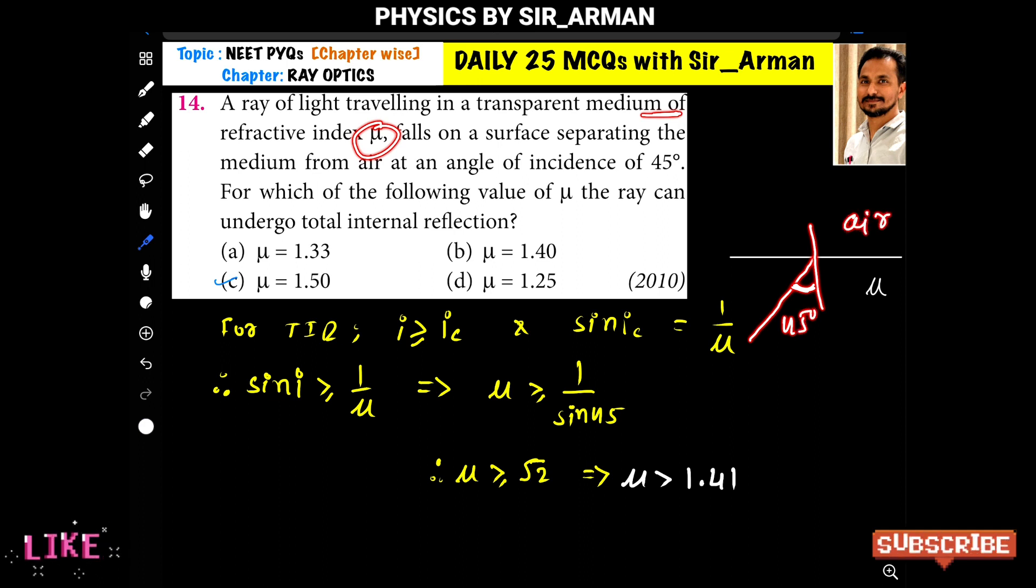This is air. For which of the following values of μ can the ray undergo total internal reflection? The ray should undergo TIR, total internal reflection. Now we know that for total internal reflection,